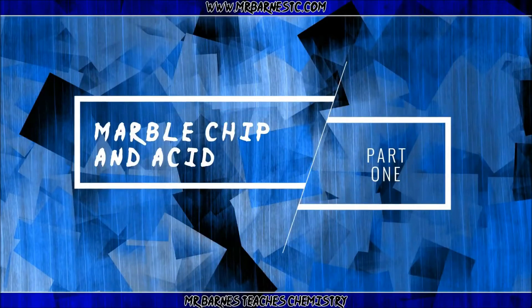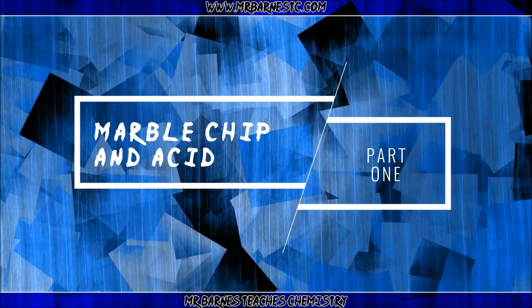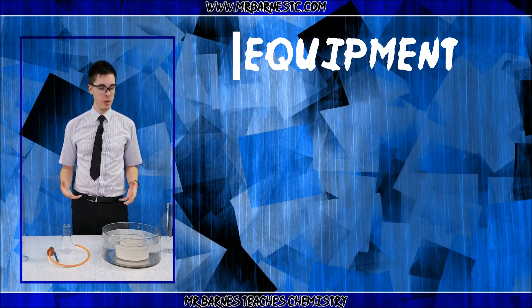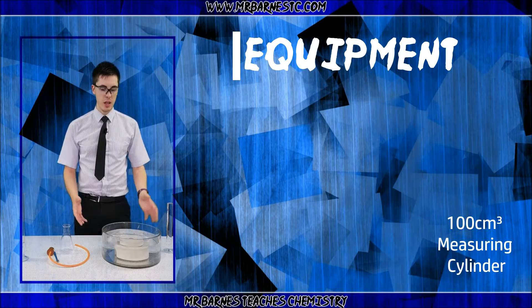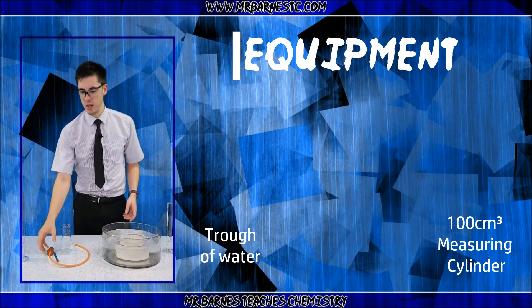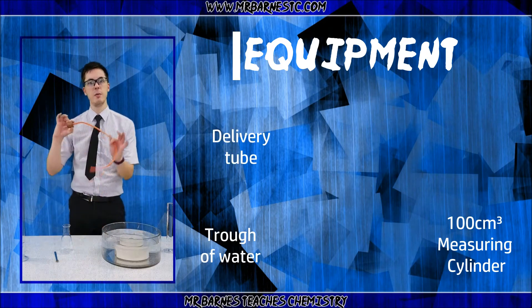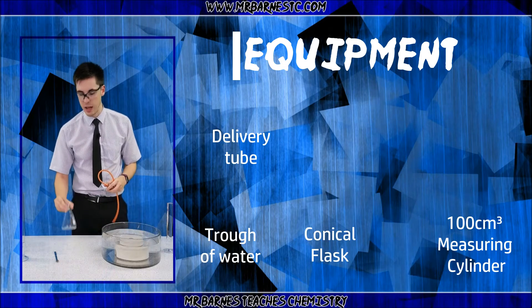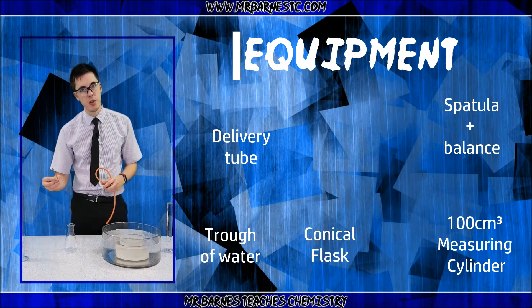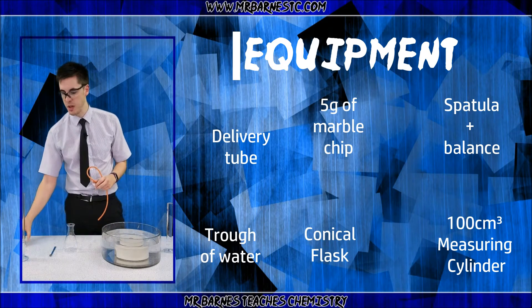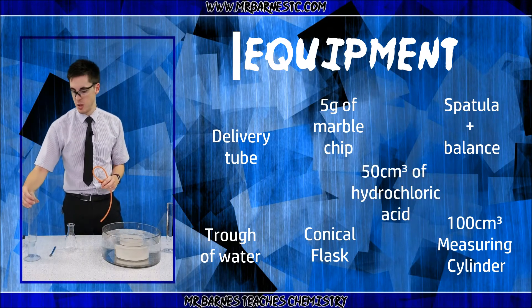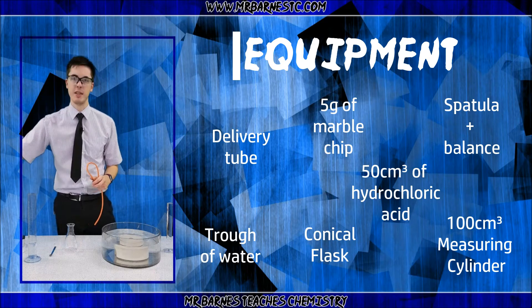There are two practicals you need to be able to remember, the first one being reacting marble chip and acid. The first thing you need is a measuring cylinder - I've gone with 100ml full of water - a tub of water, a delivery tube which is going to go into your conical flask, a spatula so you can measure out your marble chips (I've gone with a small size), and 50cm³ of hydrochloric acid.